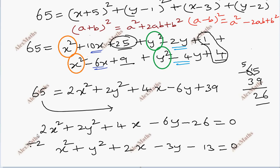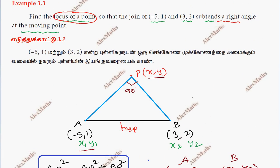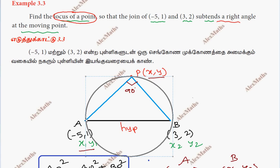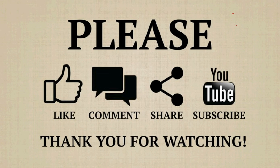So the locus equation is x² + y² + 2x − 3y − 13 = 0, which is a circle equation. This makes sense because the angle in a semicircle is 90 degrees — point P moves on a circle. If point P moves such that the join AB subtends a right angle at P, then P lies on this circle. That is the locus.